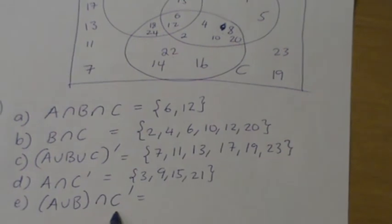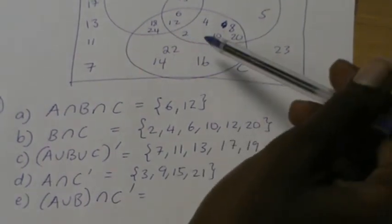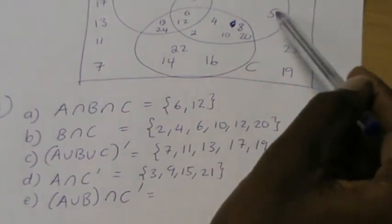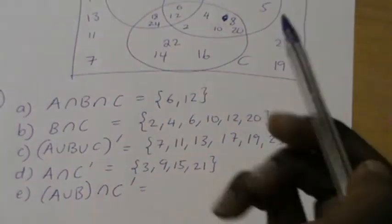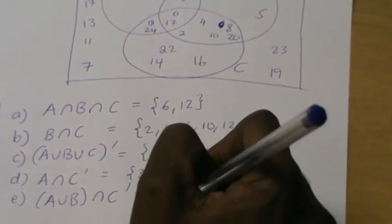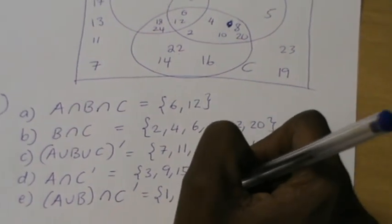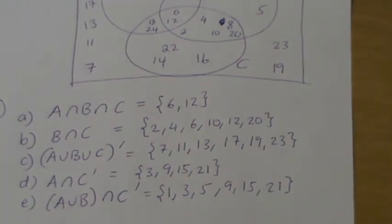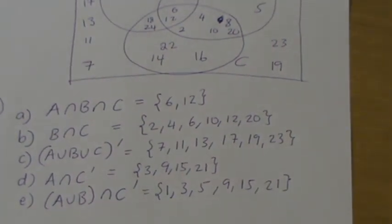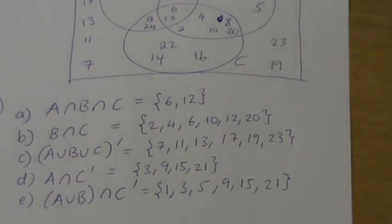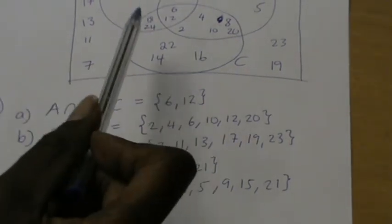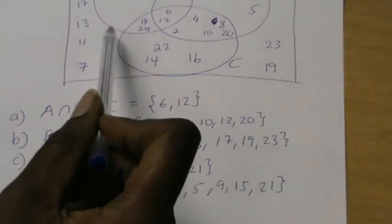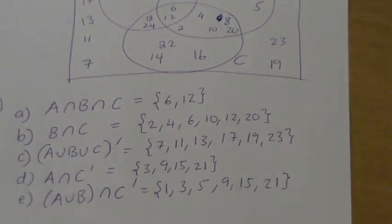A union B intersect C complement. These are elements inside the circle A and B but not inside this circle, so it's this one: 1, 3, 5, 9, 15, 21. That is 1, 3, 5, 9, 15, and 21. So that is how you would do that one. If your Venn diagram is correct, you won't have any problems listing. So again, a reminder, don't forget about these elements that are outside the sets but are inside the universal set.